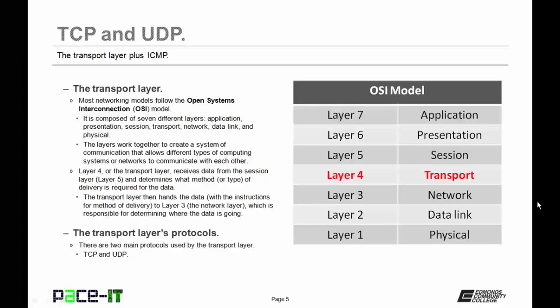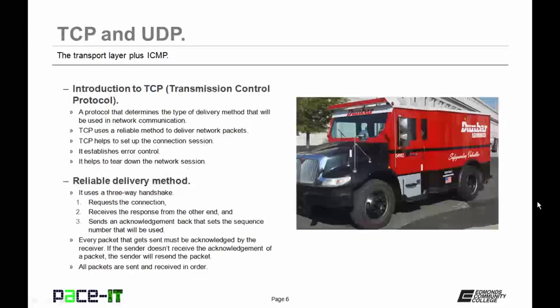There are two main transport layer protocols: TCP and UDP. TCP, or the Transmission Control Protocol, is a protocol that determines the type of delivery method that will be used in network communications. TCP uses a reliable method to deliver network packets. TCP helps to set up the connection session, helps to establish error control during the communication session, and helps to tear down the communication session when it's done. TCP does use a reliable delivery method, and one of the main ways that it does this is through the use of a three-way handshake.